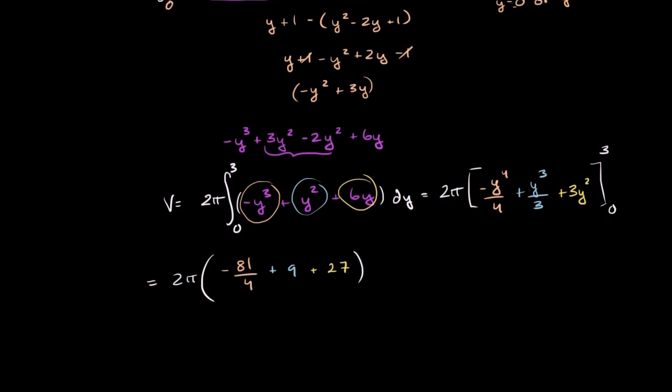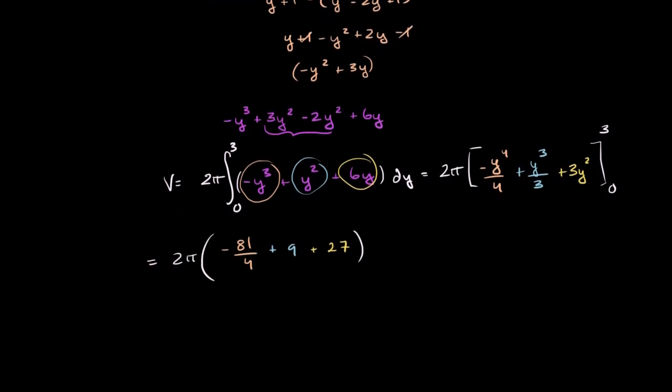So let's just add them all up. This is going to be 9 plus 27 is 36. And if we want to add it to negative 81 over 4, we just have to find a common denominator.